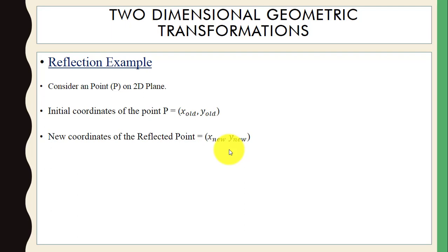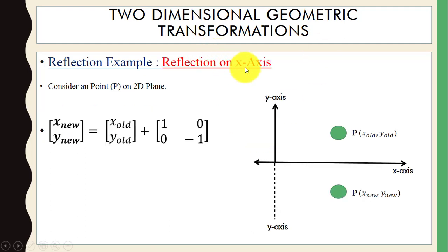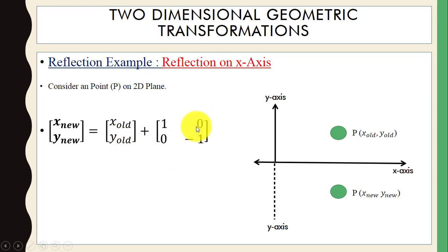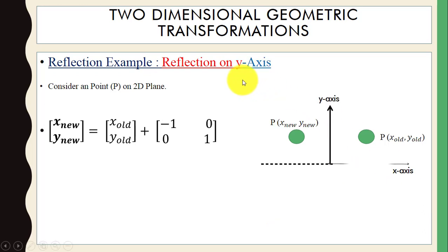We have a point and you can see the initial position denoted here, and this is the new coordinates — the reflected point after reflection. Now we are doing reflection on the x-axis. Here is the matrix for reflection on the x-axis; the new coordinates can be computed by multiplying the old position with this matrix.